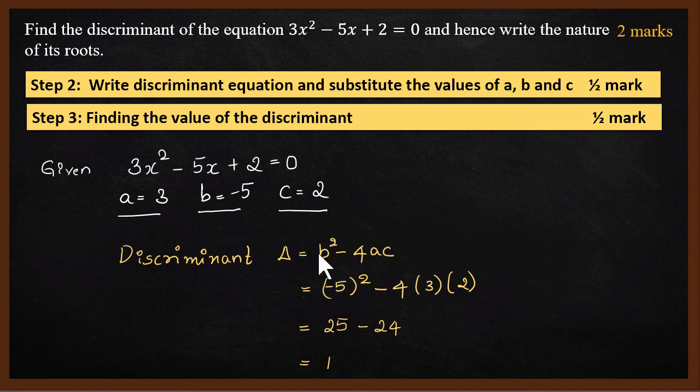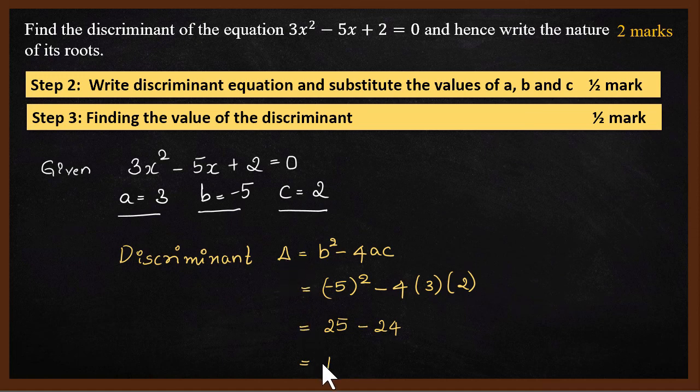The b value is -5, so b² is (-5)² which equals 25. For 4ac, a is 3 and c is 2, so we have 4 × 3 × 2. 4 × 3 is 12, and 12 × 2 is 24. We get 25 - 24 which equals 1. So the discriminant is 1. For writing the discriminant formula correctly and deriving the correct value, you get 1 mark.